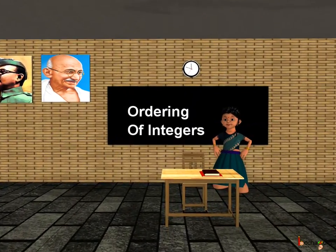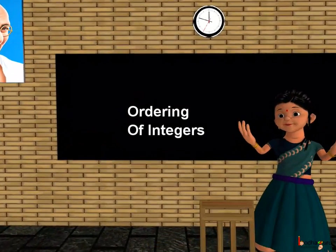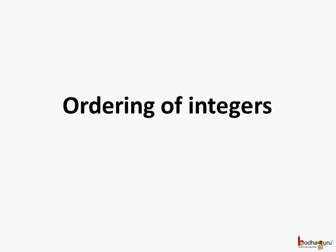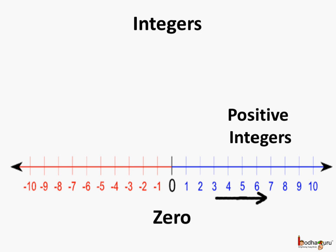Good morning, children. Today we shall learn about ordering of integers. First, what are integers? Integers is a collection of whole numbers which consists of 0 and the positive numbers and the negative numbers too.